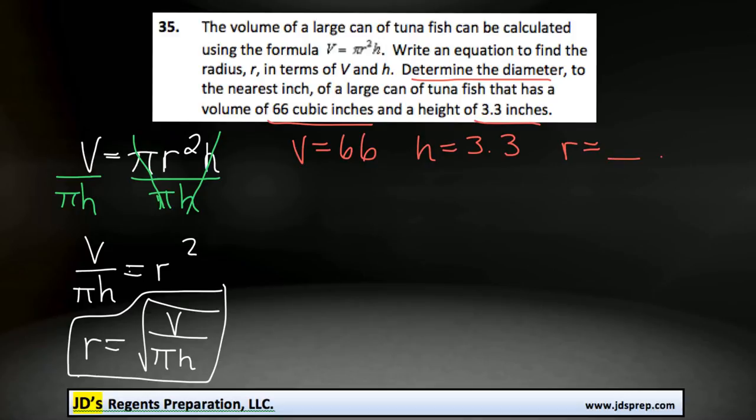And conveniently, we already have it isolated in this formula. So the radius is going to be the square root of the volume, that's 66, divided by pi times our height, 3.3. And if you type this into your calculator, you should get a rounded value of 2.52.